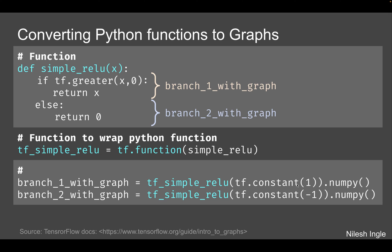When we pass tf.constant(1) to this function, it runs through the graph where the condition is evaluated. Since one is greater than zero, the if-branch gets executed and a branch is created with that part. If that same function is called again with a second value — still an integer but going to the else branch — it creates another branch within the graph. The key takeaway is that branching in graphs is created based on if-else statements or other Python control flow used in the function.